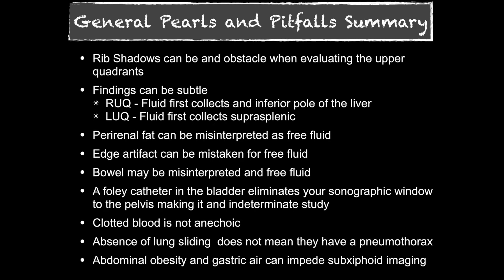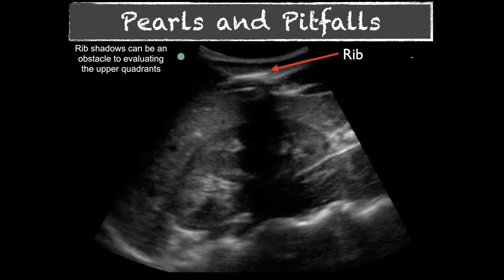Here are the pearls and pitfalls we'll discuss — no need to memorize each one since we'll go through them individually. One of the biggest things to always think about is rib shadows, especially when looking at the upper quadrants. Here we can see a rib and the shadow coming down from it.